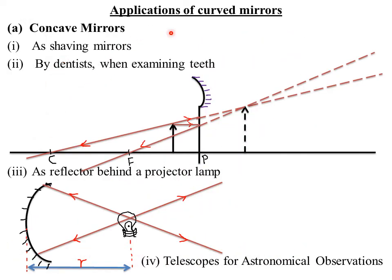We now look at applications of curved mirrors — where do we apply curved mirrors in real life? The first application of concave mirrors is as shaving mirrors in barbershops. Concave mirrors are also used by dentists when examining teeth. In each case, the object is placed within the focal length of the mirror so that a magnified and erect image is obtained.